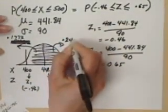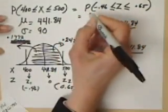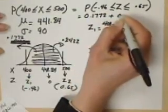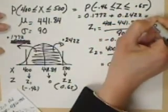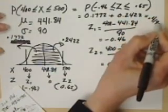So to come up with this answer, we have to add the two areas, 0.1772 plus 0.2422. And the answer is 0.4194.